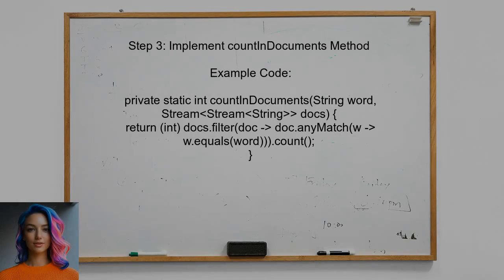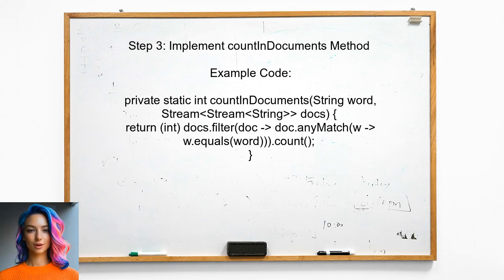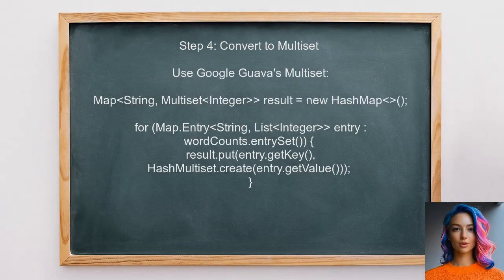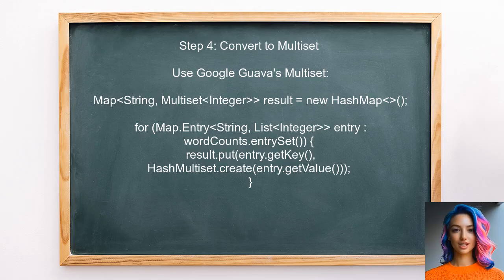Now the user should implement the countInDocuments method. This method will count how many times a specific word appears in each document. Finally, the user can convert the list of counts into a multiset structure. This will allow for easy representation of the counts for each word across the documents.